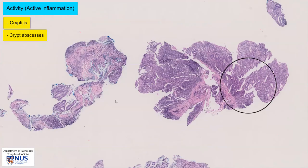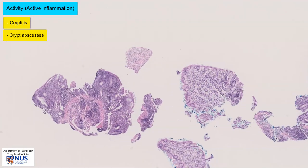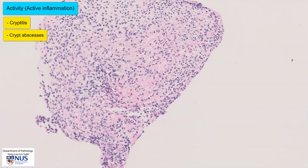We can also see in this particular biopsy that there is acute ulcer exudate here. There is a fibrino-inflammatory ulcer exudate with fibrin and lots of neutrophils. This is evidence of mucosal ulceration and is also a feature of activity.